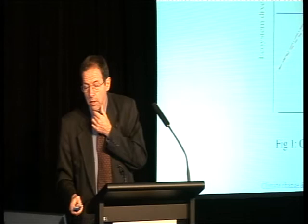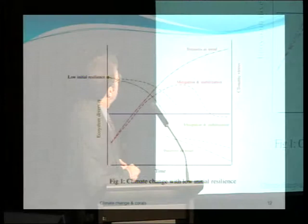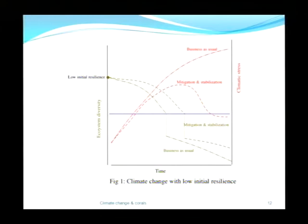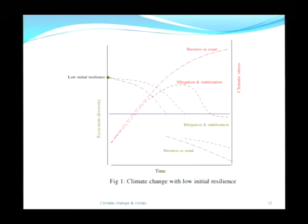Here are little pictures where, on this axis, we see climatic stress. Under business as usual it just keeps going up. If we have low initial resilience, even with mitigation and stabilisation we reach a transition point before we've stabilised the system. Under the mitigation/stabilisation scenario climate stress gradually declines, but it's too late because the system has already collapsed. On the other hand, with high additional resilience the system is under stress but survives long enough, thanks to its initial resilience, to be maintained. Then as the stress from climate change is gradually withdrawn, we see some kind of recovery. That's the picture I have in mind when I think about improving resilience as a strategy.